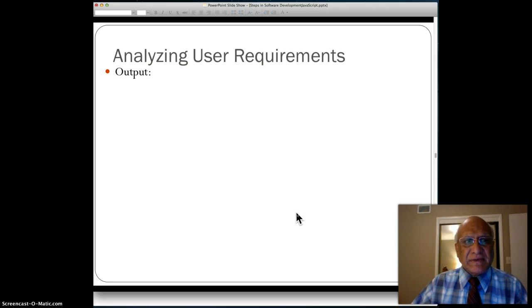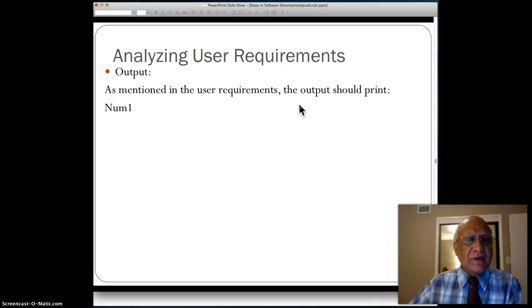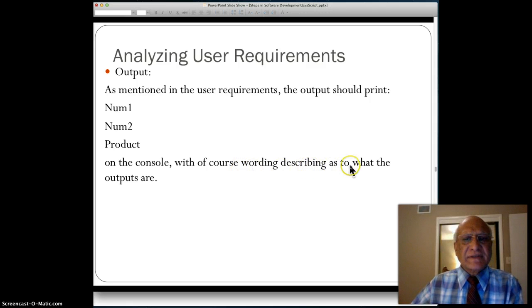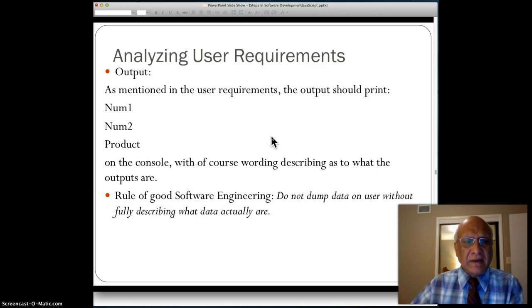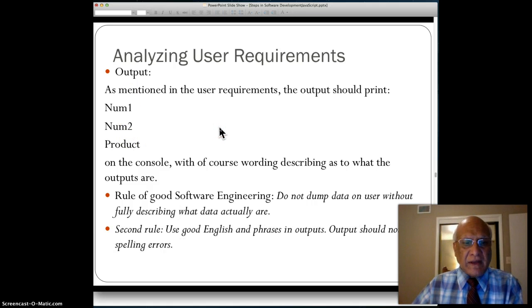The next part in the user requirement is output. As mentioned in the user requirements, output should print num1, num2, and product on the console, with of course wording describing what those outputs are. The rule of good software engineering is do not dump data on users without fully describing what data actually are. So you should describe that hey, this was the first number, second number, and this is the product of the two. You don't just blurt out numbers onto the screen. And the second rule is that use good English and phrases in outputs. Output should not have spelling errors.